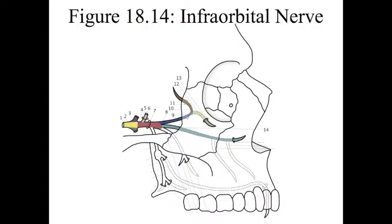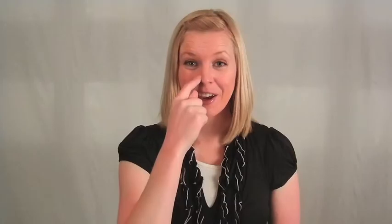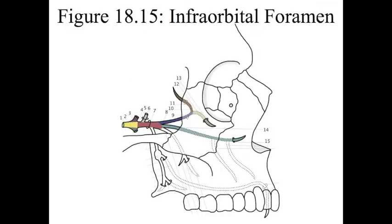Number 14 is the infraorbital nerve. To remember these innervations, just orbit the infraorbital foramen. You start here at the upper lip, to the cheek, to the lower eyelid, and the side of the nose — the infraorbital nerve. Number 15 is the infraorbital foramen.